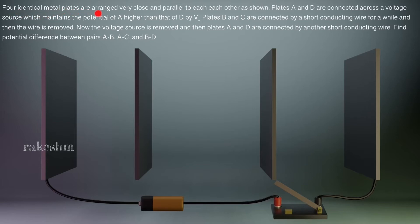Let's first analyze this: four identical metal plates are arranged very close and parallel to each other as shown. We can see here four identical metal plates arranged parallel to each other. They are very close but I have drawn them a little far so that it is easy for you to visualize what is going on.